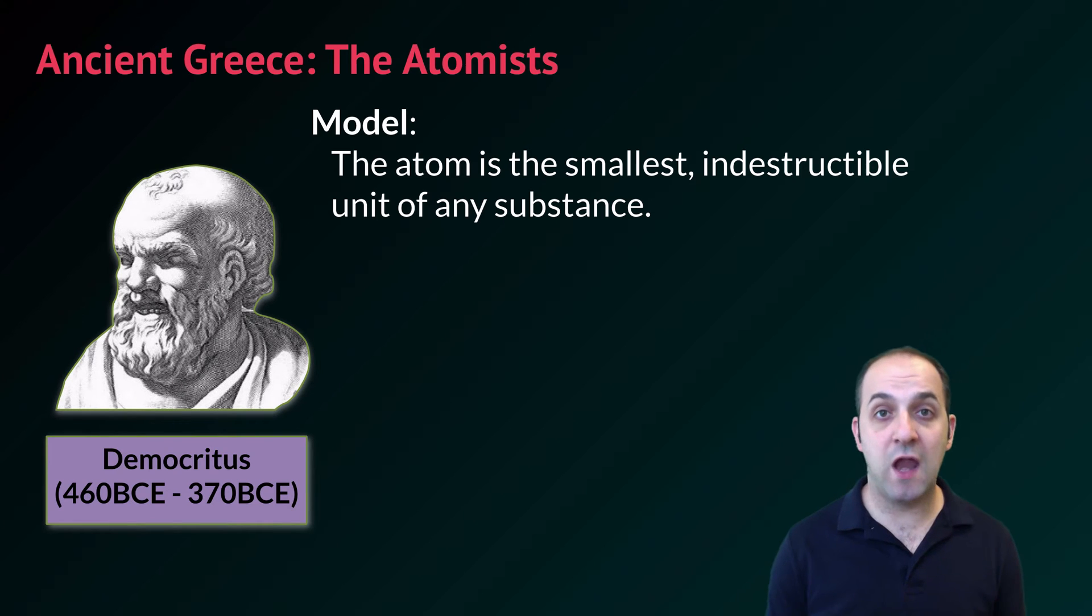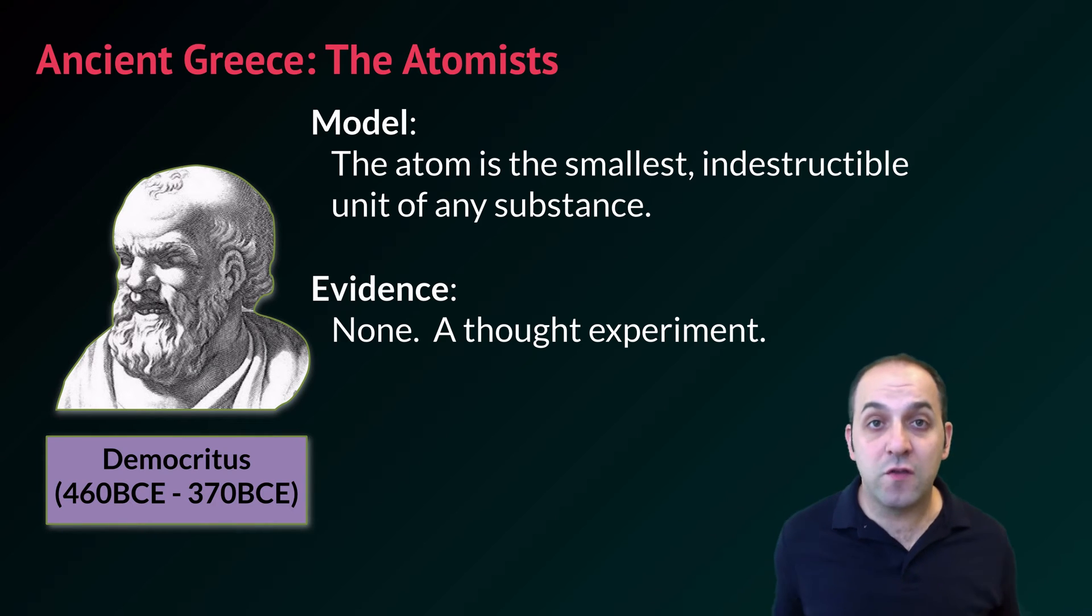We're going to start back in ancient Greece and look at a group of philosophers known as the atomists. Here is one particular atomist, Democritus. These folks are noteworthy because they are the first ones who thought that there was some small indestructible fundamental unit of any substance. Atom comes from the Greek for atomos which means indivisible. What's interesting about the atomists is that they based their model on nothing. They just based it on thinking. They looked at the world around them and decided that there had to be some fundamental unit to matter below which you really could not get any further.